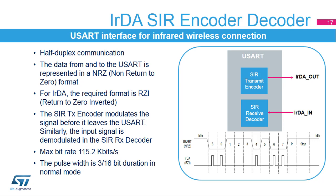The USART only supports bitrates up to 115.2 kilobits per second for the SIR ENDEC. In normal mode, the transmitted pulse width is specified as 3/16 of a bit period.